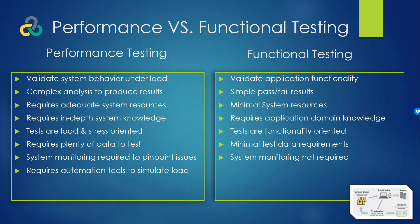Performance testing can only be done using automation tools since you have to simulate hundreds or thousands of users. I have seen people put 50 people in a lab and try to coordinate a manual load test — it was a disaster. You can't do iterative testing and get reasonable metrics that way. Functional testing, on the other hand, can be done with or without automation — whether you test manually or with an automation tool, the results will be the same. I hope this gives you a bird's-eye view of the differences between performance testing and functional testing.